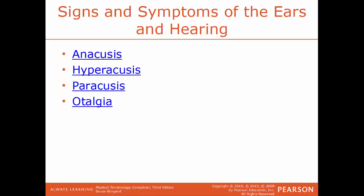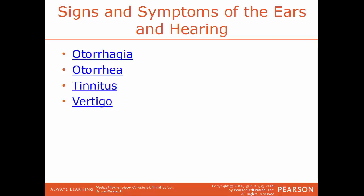Some signs and symptoms of the ears: anacusis is complete deafness — the complete lack of hearing. Hyperacusis is having an increased sensitivity to sound. Paracusis is impaired hearing or deafness. Otalgia is another term for an earache in general. Otorrhagia is bleeding from the ear. Otorrhea is where you have drainage from the ear. Tinnitus is having a buzzing sound or ringing sound in the ears. And vertigo is a sensation of whirling or spinning, or a loss of balance.